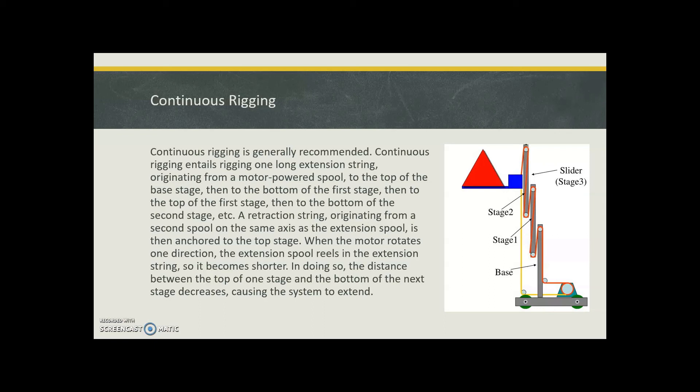A retraction string originating from a second spool on the same axis as the extension spool is then anchored to the top. When the motor rotates in one direction, the extension spool reels in the extension string, so it becomes shorter.